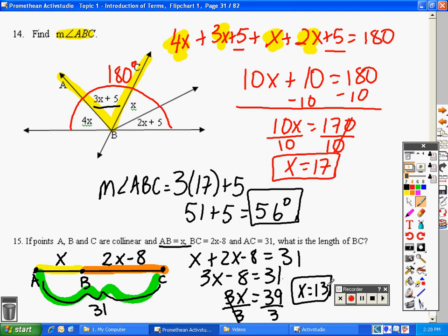Last part is we want the length of B, C. So, B, C is equal to 2 times this number minus 8. Using your calculators, 2 times 13 is 26, minus 8 is 18. And that is your answer.